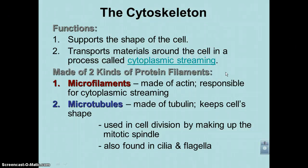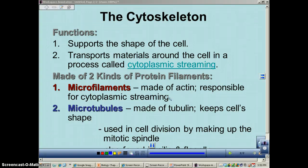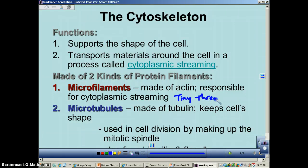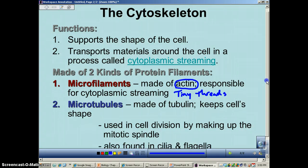There are two protein filaments that make up the cytoskeleton, so you want to remember that the cytoskeleton is made out of proteins. The first part is microfilaments. Micro means small, filaments mean thread — these guys are tiny threads. The type of protein they're made out of is called actin, and this is what you use during cytoplasmic streaming.